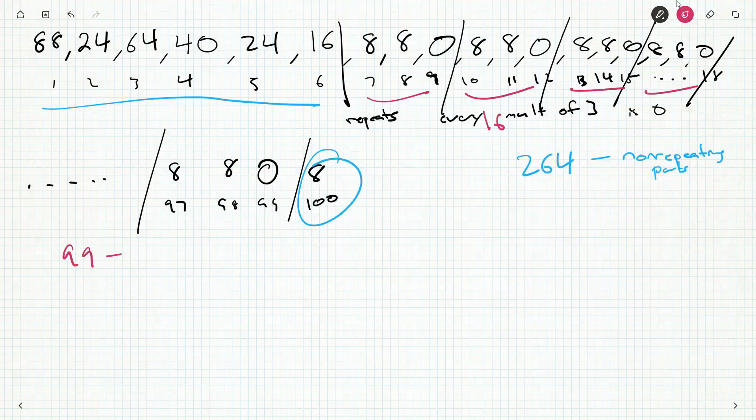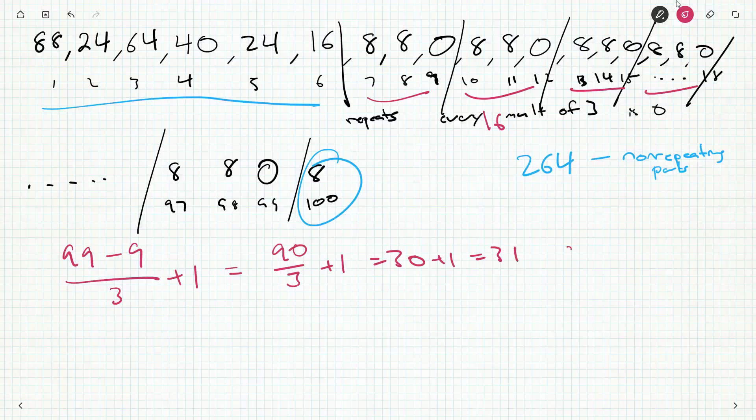So between 99 and 9, we'll divide that by 3 and we'll add 1 to get the total number of groups. So this will be 90 over 3 plus 1, so this will be 30 plus 1. So we'll have 31 groups of 8, 8, 0, each of those contributing 16 to the sum. So we'll have 264 plus 31 16s, and hopefully that'll turn out to be one of the possible answers.